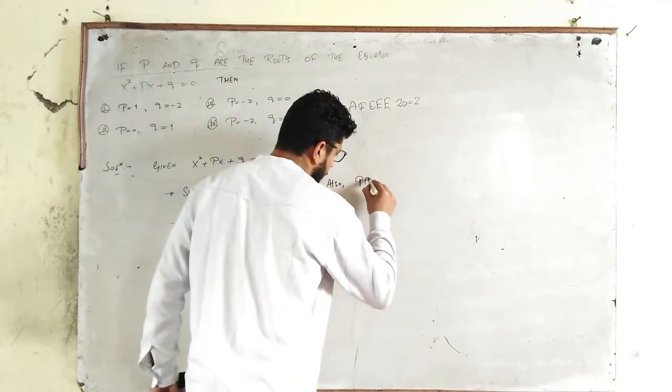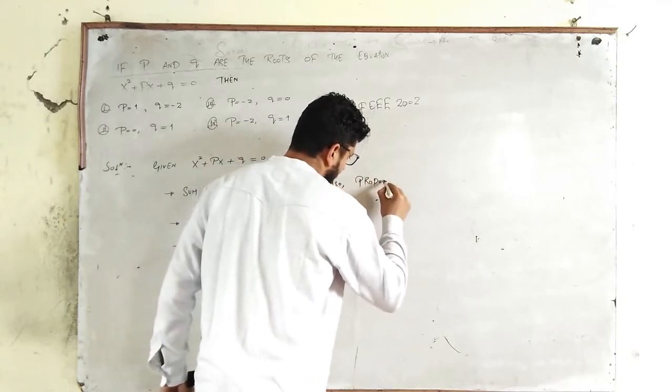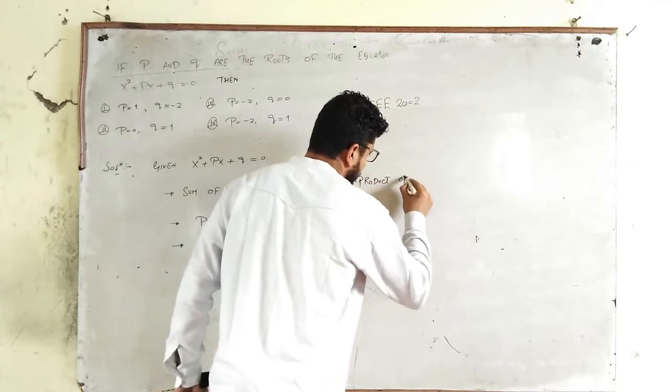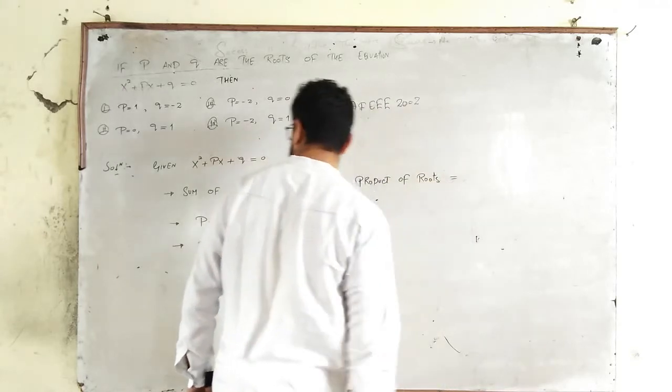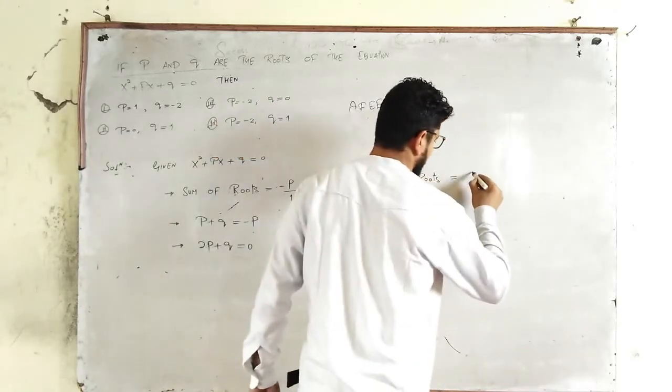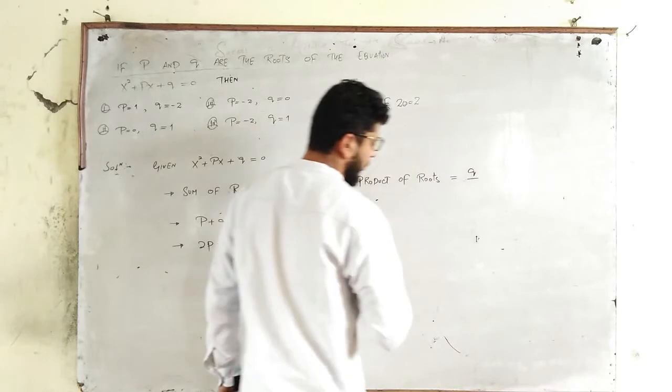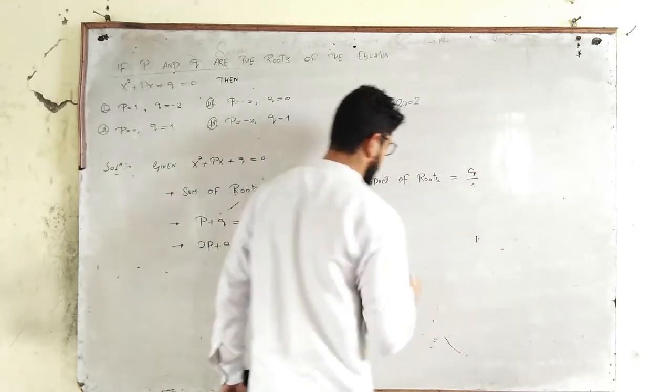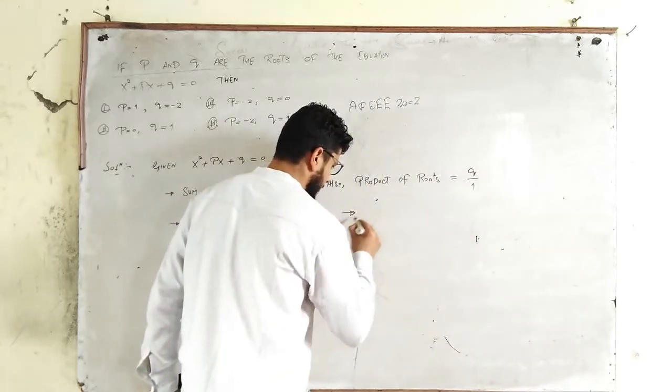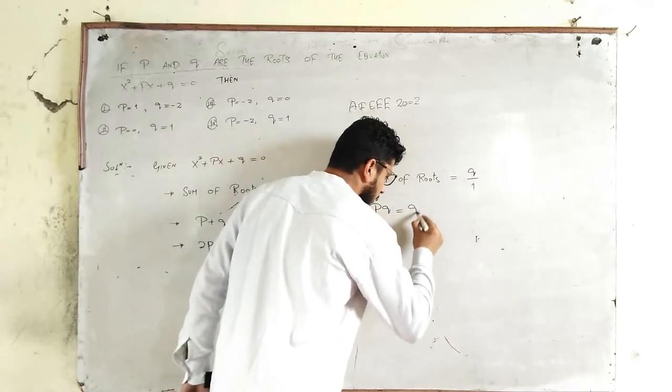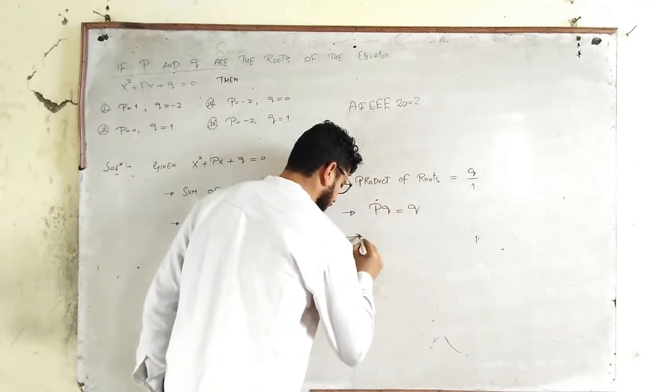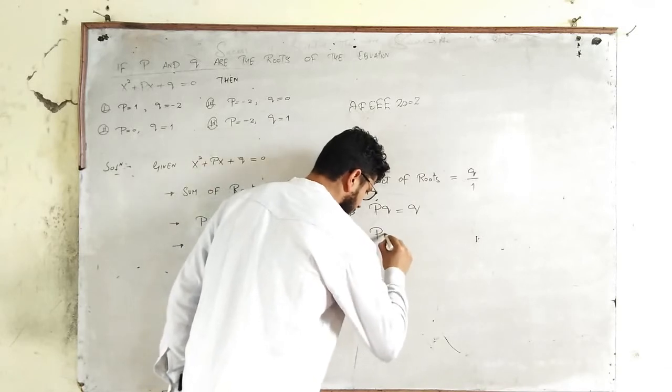Product of roots. The product of roots is the constant term, that is Q here, upon the coefficient of x², that is 1. Which implies PQ = Q. Q and Q will cancel, you will get the result that P = 1.